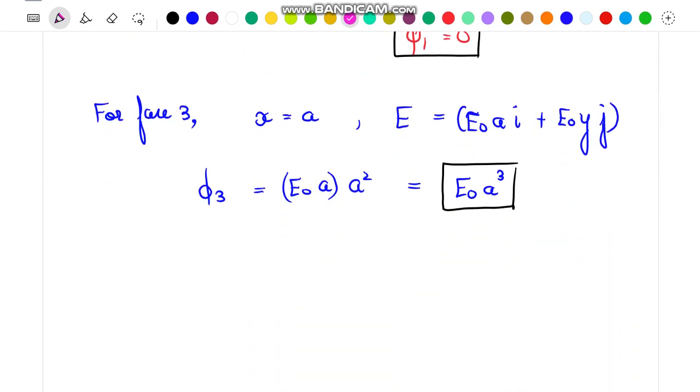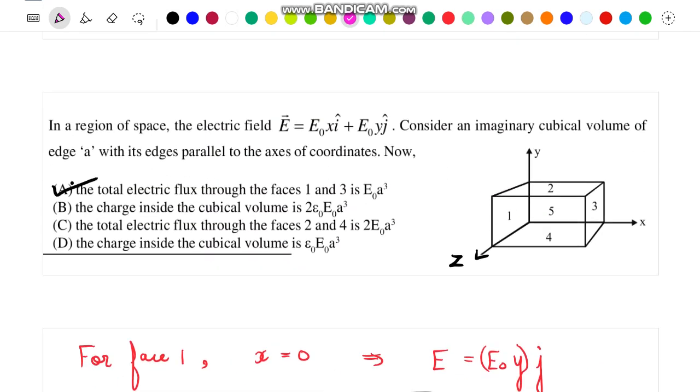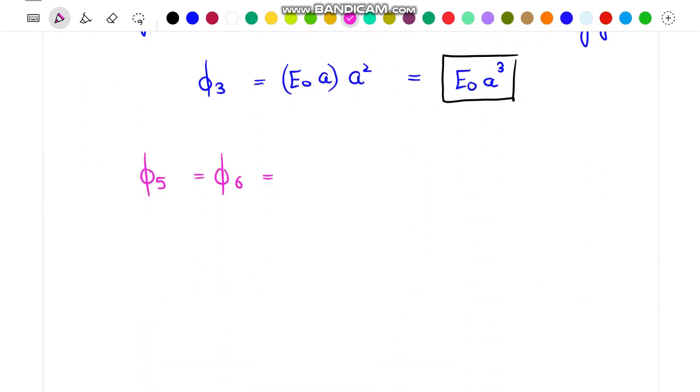Now let us talk about flux passing through faces 5 and 6. Face 5 is the front face and face 6 is the back face. As you can see, the field is in x and y direction but there is no component of field in the z direction. So this field is going to graze the front as well as the back face. So we can say that the flux passing through faces 5 and 6 is 0.